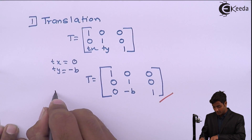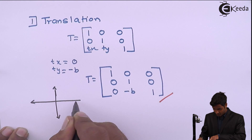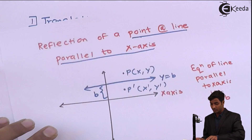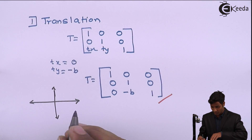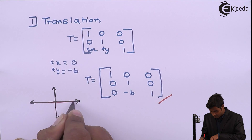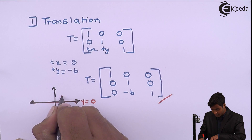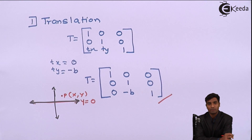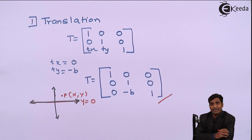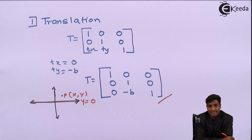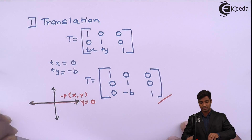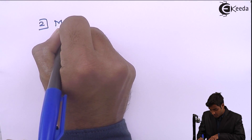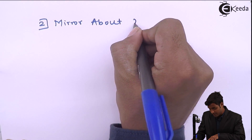After performing this transformation, the figure will change. Earlier the line was y equal to b. After performing translation, the value of y will become 0, so the line will come onto the x-axis, y equal to 0, and the point will come somewhere as P(x, y). Now the point or the line is on the x-axis, so we will take mirror about x-axis because we have the matrices for mirror about x-axis. The second transformation is mirror about x-axis.